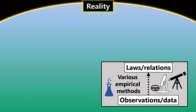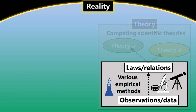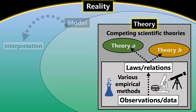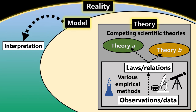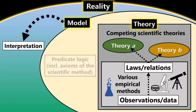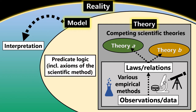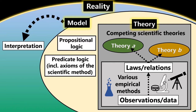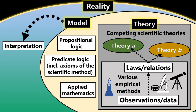Every scientific law or relationship deduced or inferred from scientific data must be embedded in a theory, and theories require models for their interpretation. Those models are composed of the axioms of the scientific method, as well as logical invariants necessary for posing intelligible propositions and reaching valid inferences, and the applied branches of mathematics by which theories and propositions about their internal relations or laws are tested.